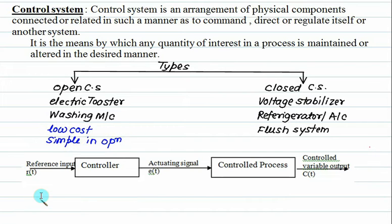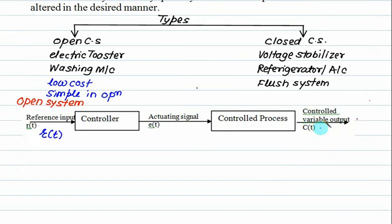Block arrangement for open system: we have a reference input R, a controller, an actuating signal called error signal, and a controlled process. The output is called controlled output or controlled variable output. Open systems are normally pre-calibrated systems.